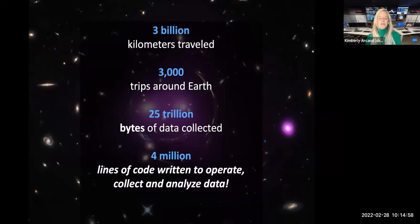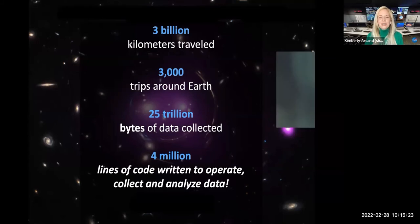So Chandra has traveled over three billion kilometers since it was launched in 1999 exploring our high energy universe. It's taken over 3000 trips around our planet. It's collected over 25 trillion bytes of data. And it has taken more than 4 million lines of code in order to operate Chandra, in order to collect Chandra data, and in order to analyze that really awesome Chandra data. So really, computer science is a critical workhorse for making sure Chandra operates smoothly. So I'd like to just move over to Sabina Hurley right now. She is our flight operations team program manager at the Chandra Control Center, which is what my background here is from. And she's going to talk a little bit about how very special Chandra is.